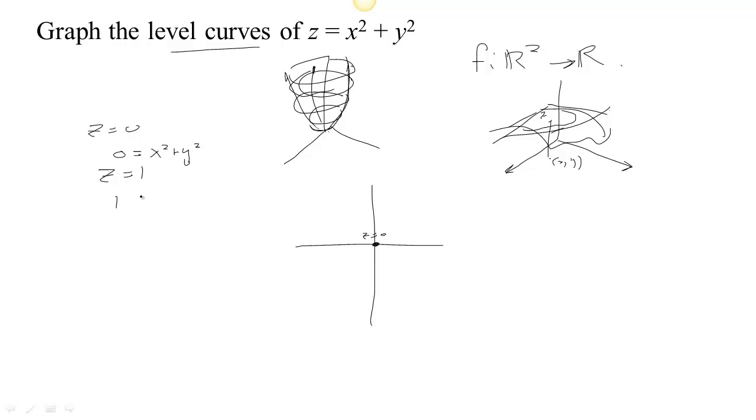If we set z equals one, then one equals x squared plus y squared. So that's the circle of radius one. All the points on the circle of radius one in the input space, in x,y space, everything on this point gets mapped to a height of one. So this is the z equal one level curve or level set.